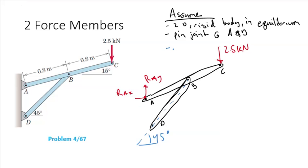However, if we identify that member DB is a two-force member, we can eliminate one of these unknowns by knowing that the force reaction at D must point along the line of action from D to B. Therefore, the only unknown is the magnitude of the reaction at D from the pin.